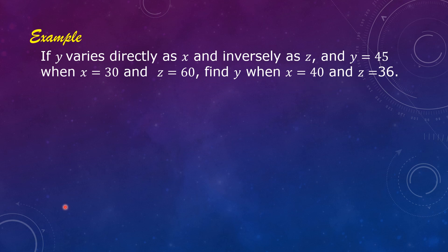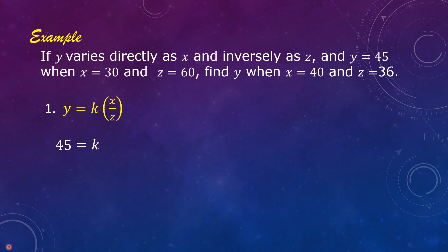First, write y is equal to k times the quantity x over z. This will serve as our formula. Then substitute 45 for y, 30 for x, and 60 for z. We have now 45 is equal to k times the quantity 30 over 60. Solve for k by multiplying both sides by 60.